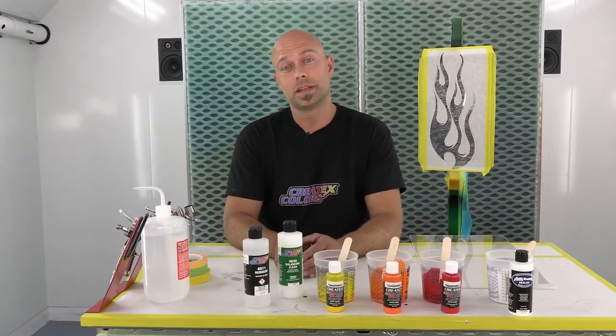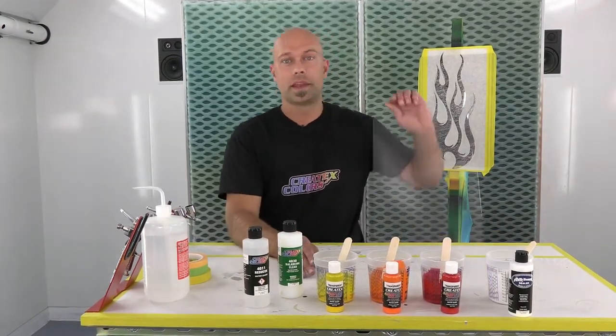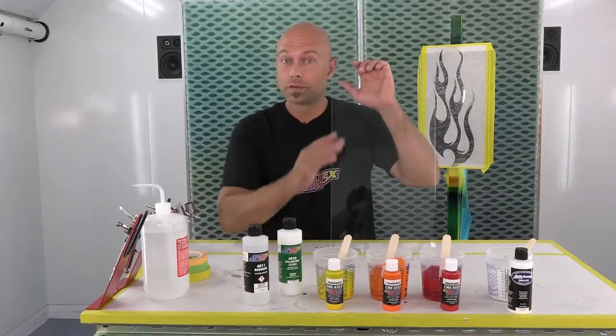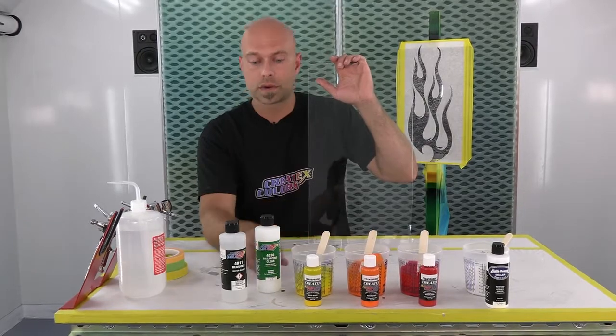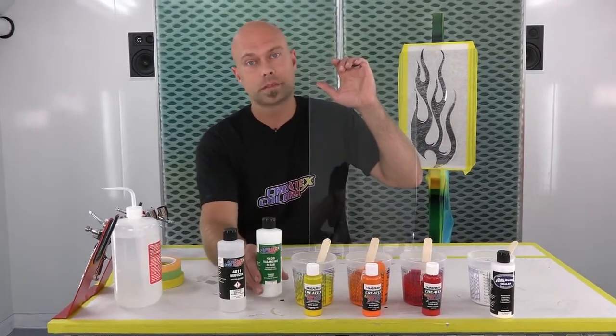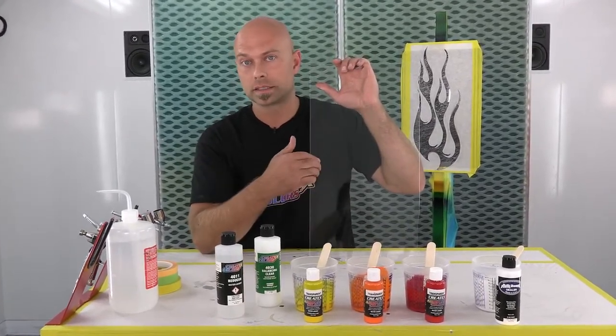Welcome to Createx Colors. I'm Chris Arpin, and today we're going to talk about painting on polycarbonate. So we're going to do a reverse paint job, and we're going to use our regular Createx line, but we're going to add a little bit of 40-30 that makes it better suited for painting on harder plastics like this.